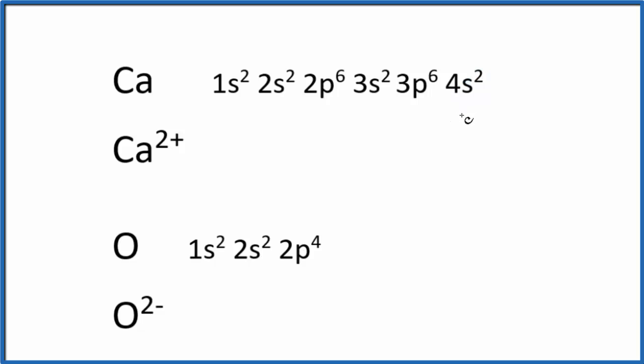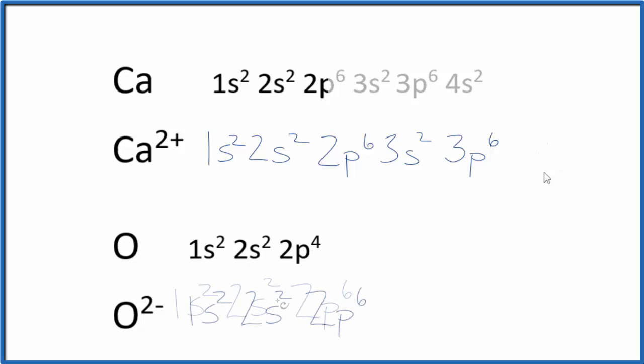We'll end up with this, so this is the electron configuration for Ca2+. We've lost these two valence electrons. For oxygen, we're going to gain 2. We've gained 2 because we have the 2-. When we do that, instead of 2p4, we'll have 2p6. That'll look like this.